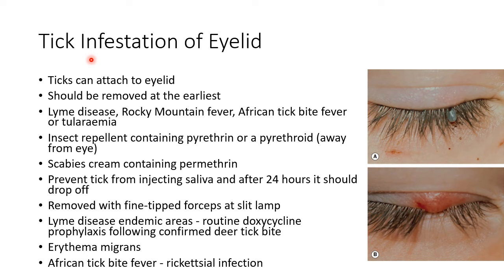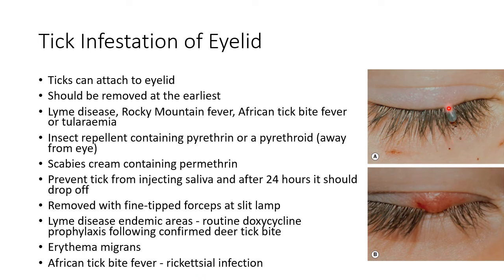Ticks can attach to the eyelid and should be removed at the earliest. They can be associated with Lyme disease, Rocky Mountain spotted fever, African tick bite fever or tularemia. Insect repellent containing pyrethrin or a pyrethroid can be used when the tick is away from the eye, and scabies cream containing permethrin can also be used. These prevent the tick from injecting saliva and after 24 hours it should drop off. Ticks can also be removed with fine-tipped forceps at the slit lamp. In Lyme disease endemic areas, routine doxycycline prophylaxis is given following confirmed deer tick bite. Signs include erythema migrans; African tick bite fever is also associated with rickettsial infection.